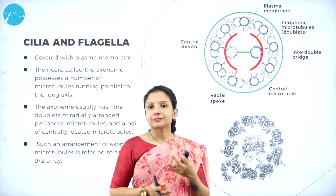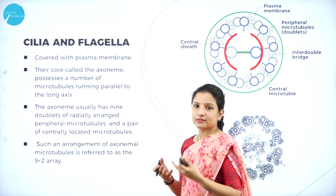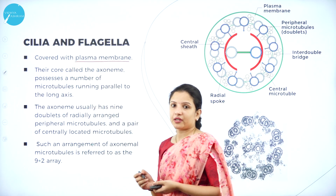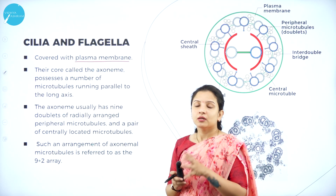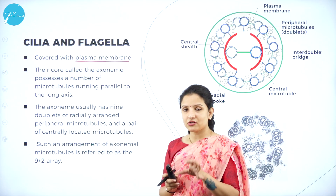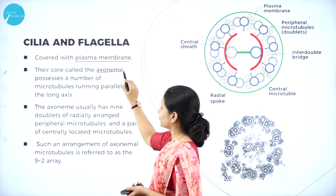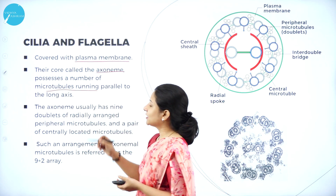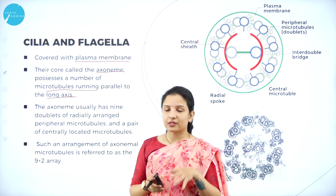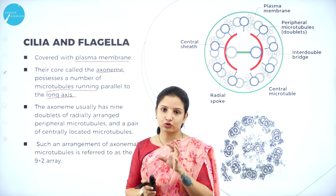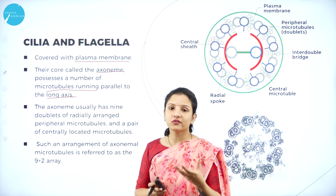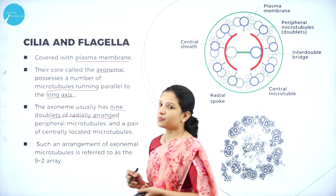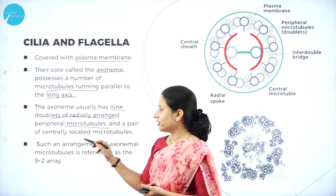Moving on to the structure of cilia and flagella — they are covered by the plasma membrane, and the central or core region is called the axoneme. The axoneme contains a large number of microtubules running parallel to the long axis. The axoneme has nine doublets of radially arranged peripheral microtubules and a pair of centrally located microtubules.